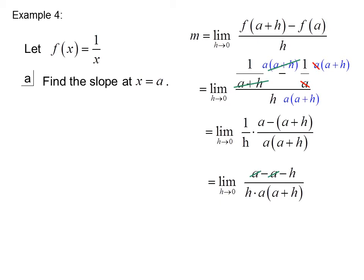Cancel the a's in the numerator, cancel an h. As h goes to 0, we get negative 1 over a squared.